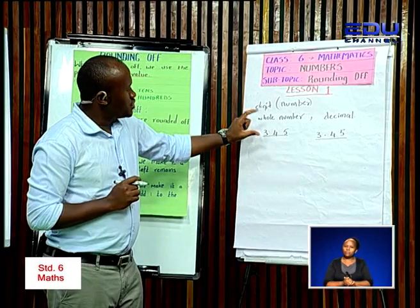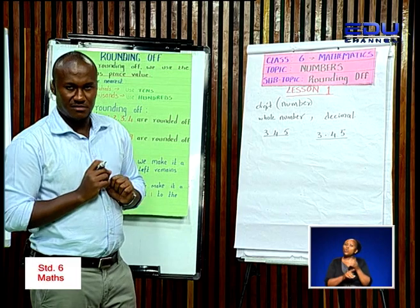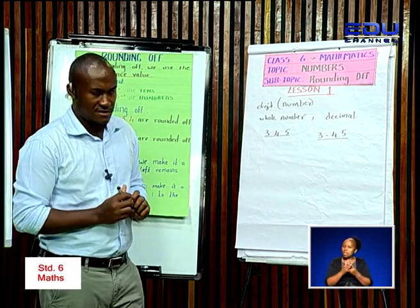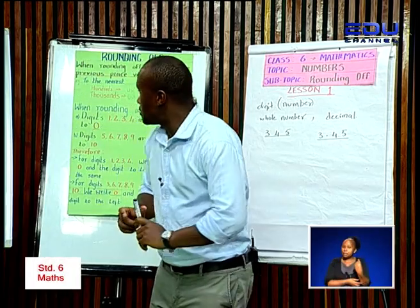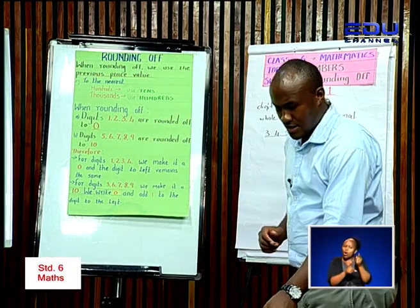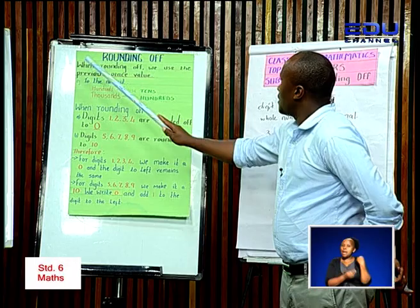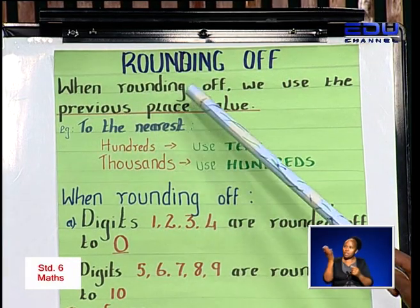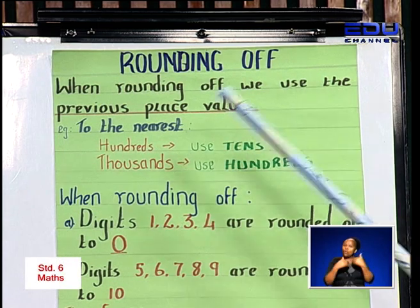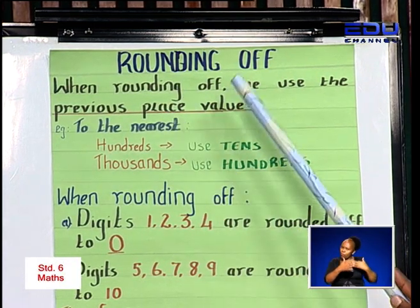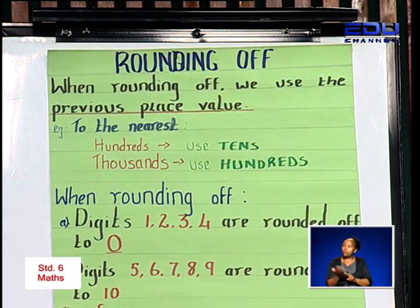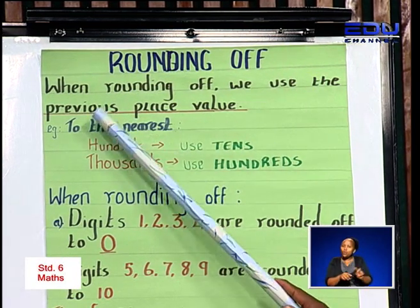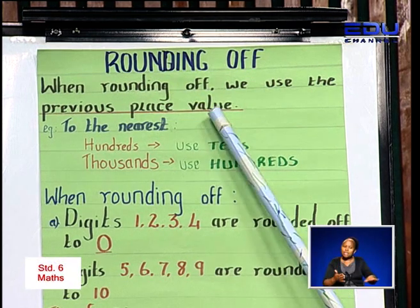We want to round off these numbers. Therefore, we are going to start with the whole number. When we talk about rounding off of whole numbers, we use the previous place value. When rounding off, we use the previous place value.